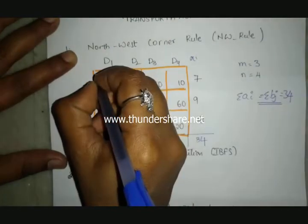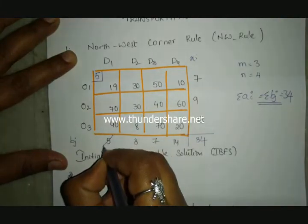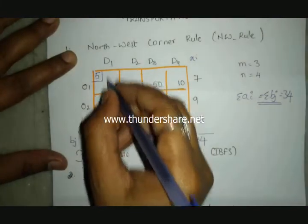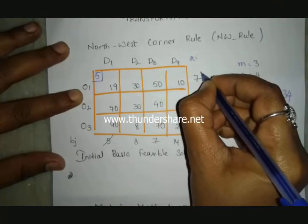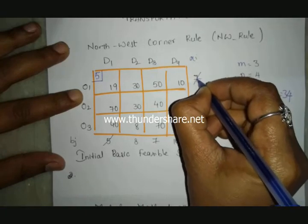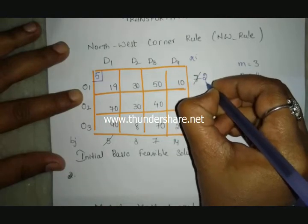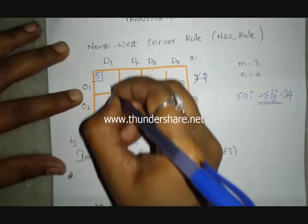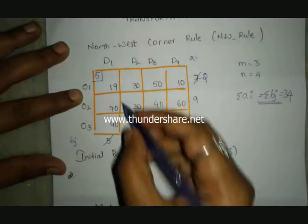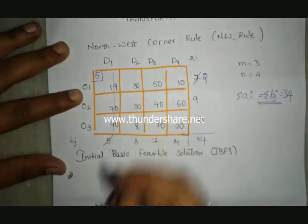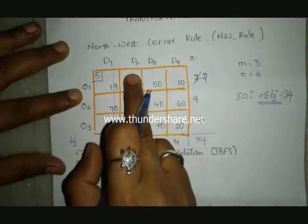Start the allocation here. The corresponding column has demand and the row has supply. Whatever is the minimum between supply and demand, we allocate that. Here seven and five - five is the minimum. So we allocate 5 here. Cancel this demand. Next remaining in the matrix, the northwest corner is here again.